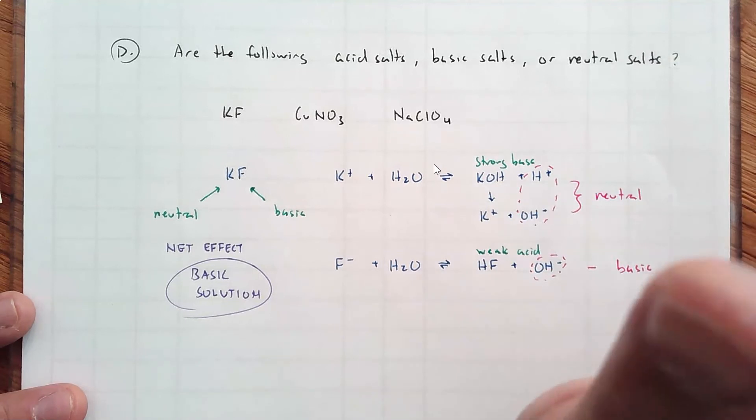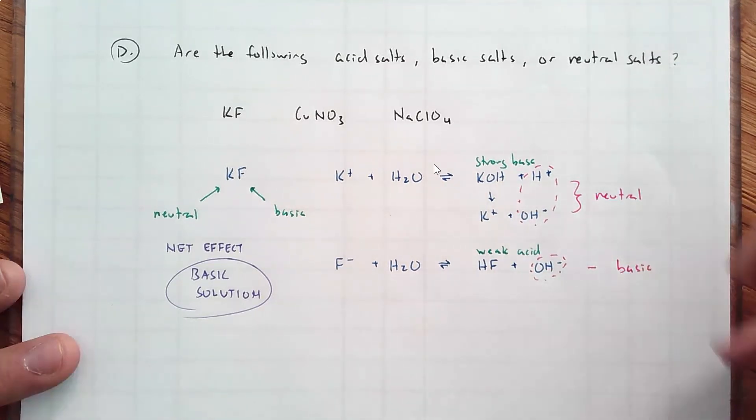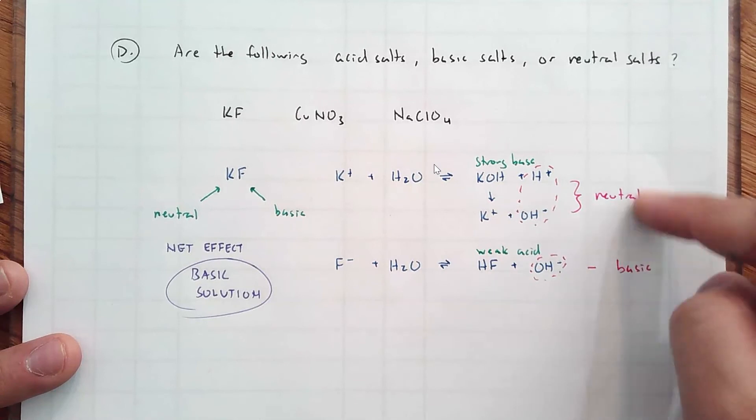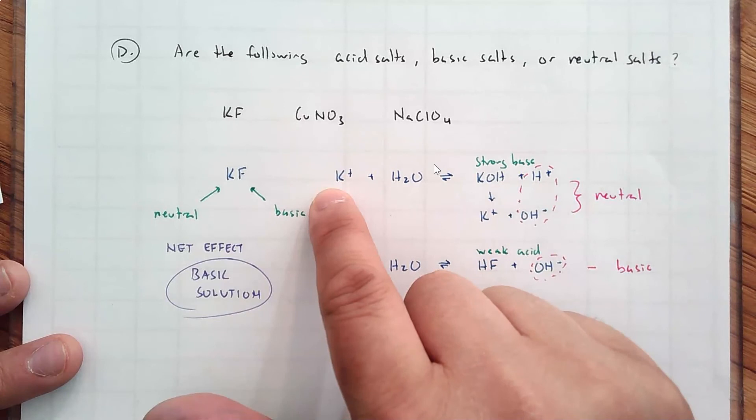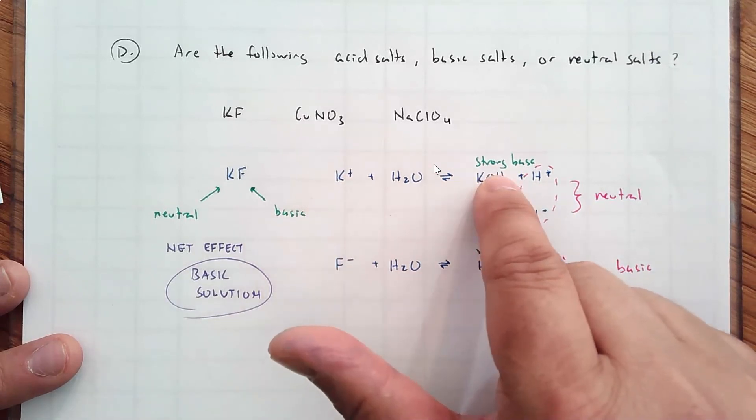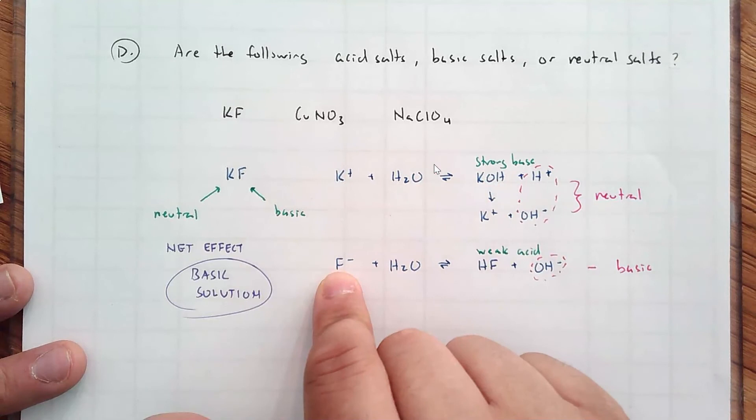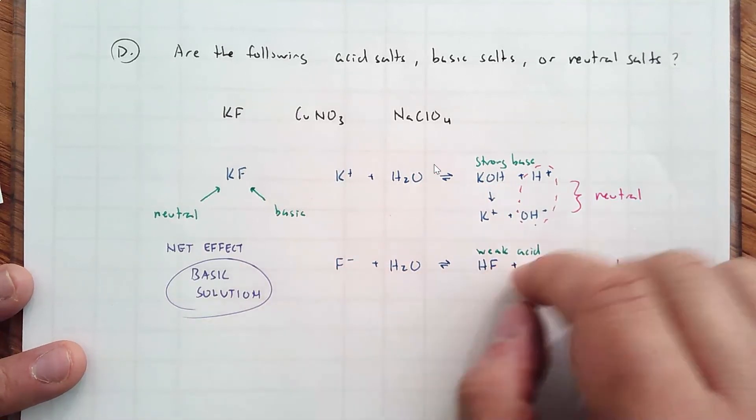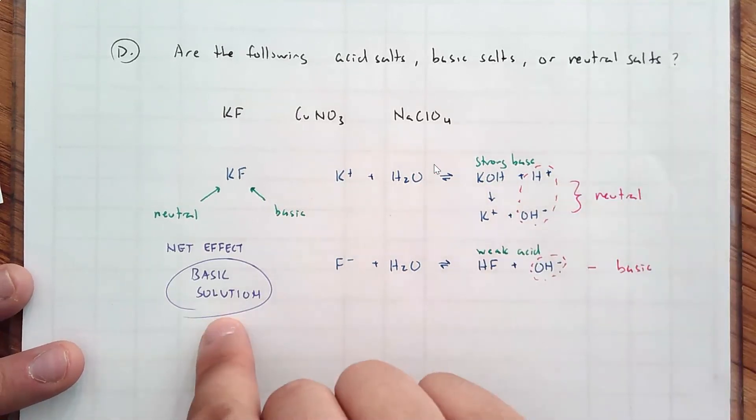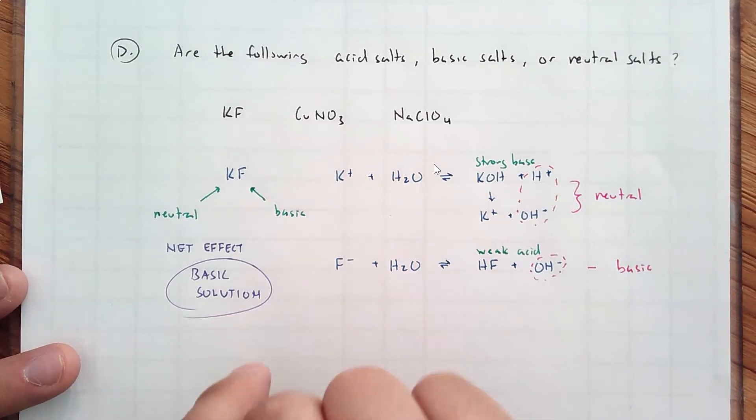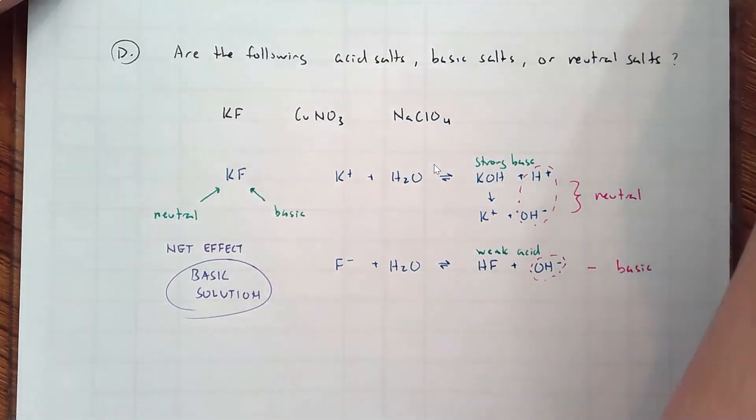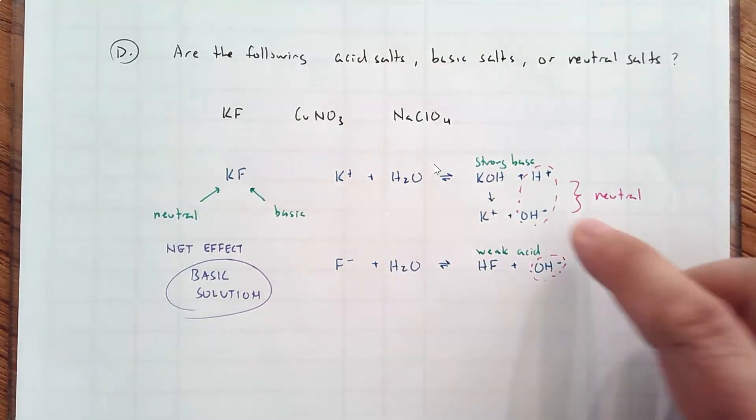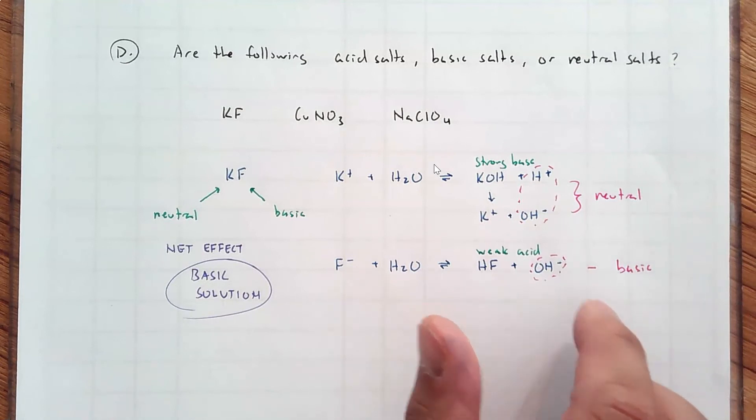Now, some of you may realize, I could have instead of doing the final analysis, neutral and basic, I could have just said strong base. The K+ is from a strong base, or is a derivative of a strong base. The F- is a derivative of the weak acid. Strong base, weak acid. Base wins. Basic solution. I'm only going to say that once, because that does work, but it's not really a great way to think about it. You should be thinking about how it either neutralizes or not the H+ or the OH-.